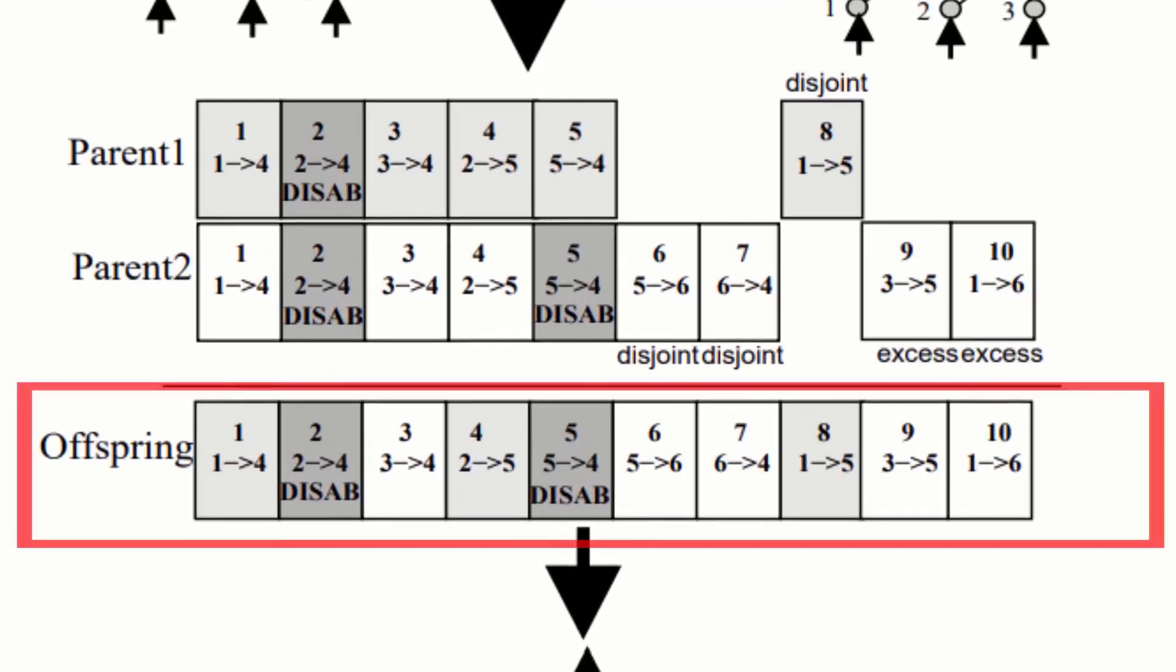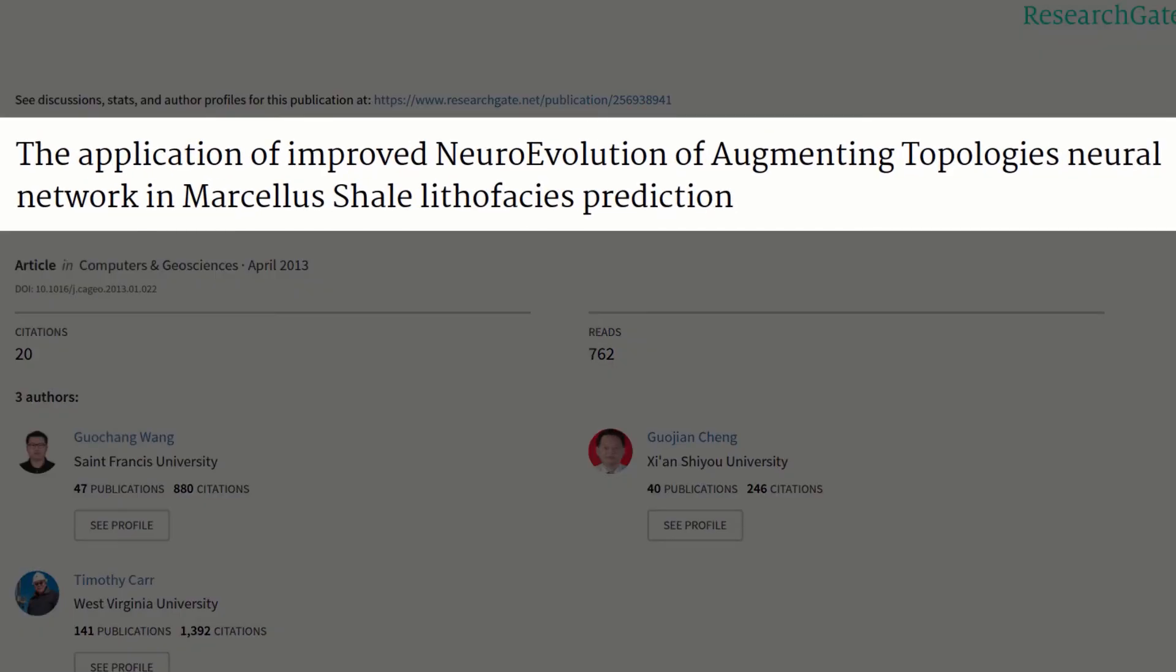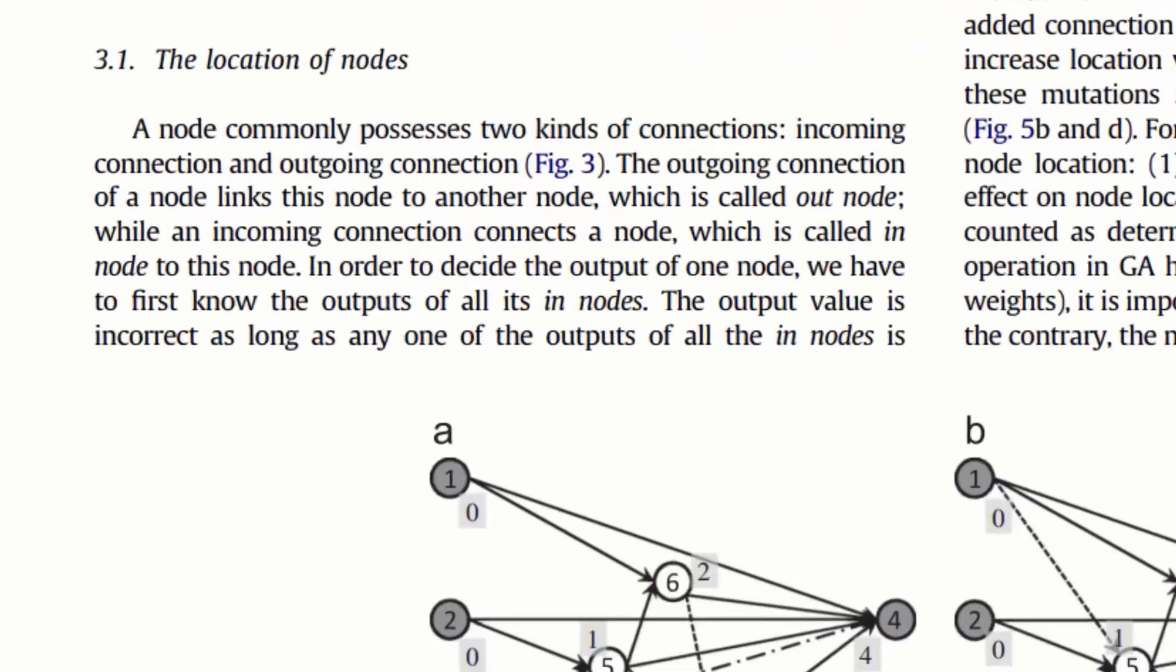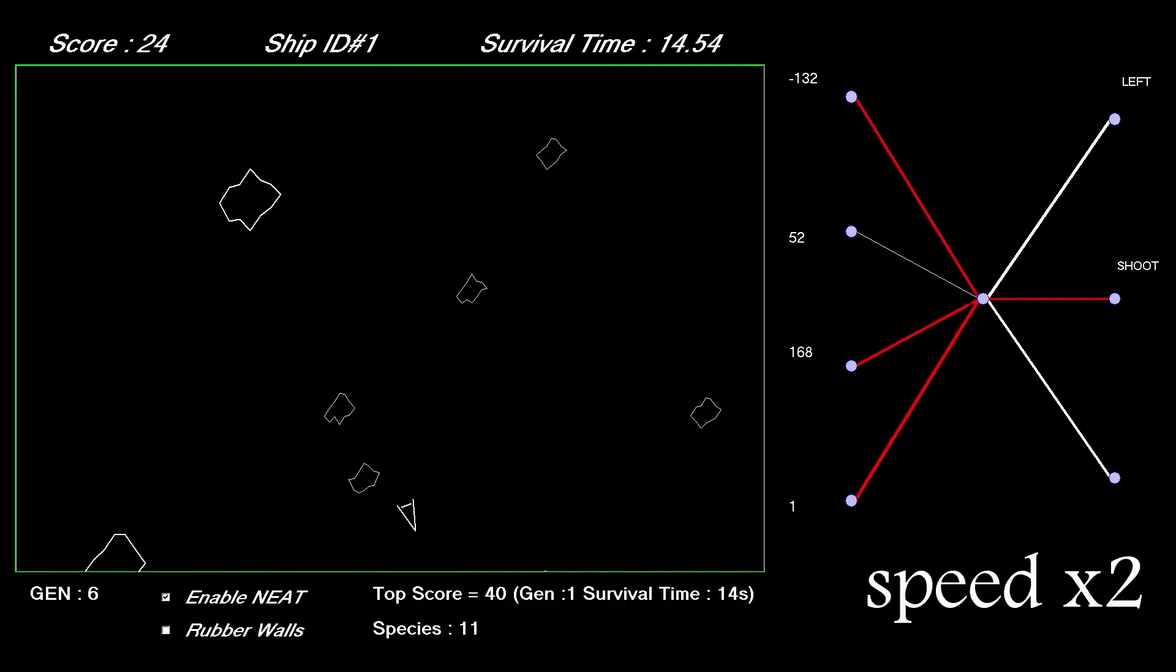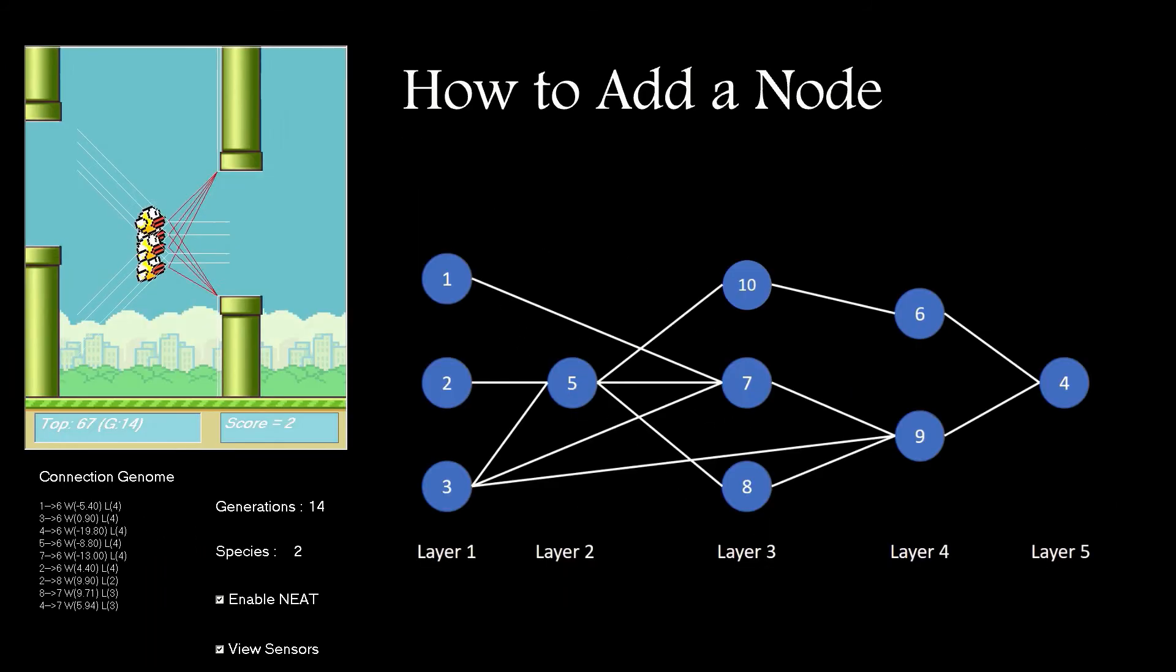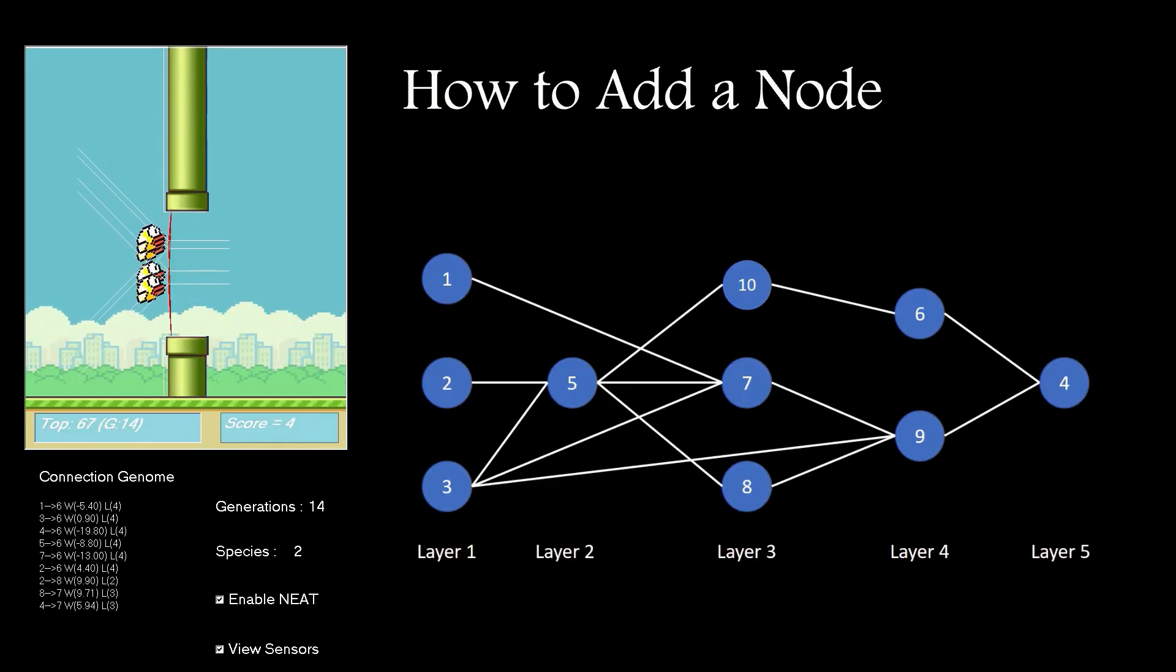And also look at how others have implemented NEAT by reviewing any published material I can find on the topic. Here, for example, is a paper detailing how they approached getting the node layers right in their implementation. I also want to check the effect the different components have on each other. Small changes to the weight mutation factors, crossover function, target species, population size, and so on can drastically affect how long it takes to converge on a solution.